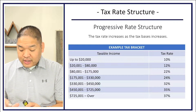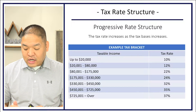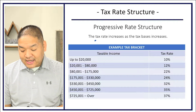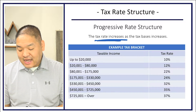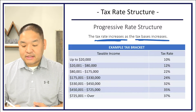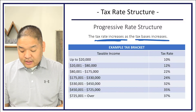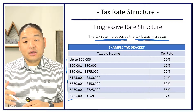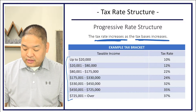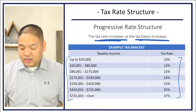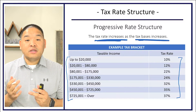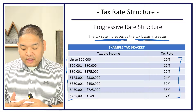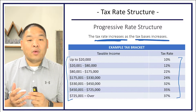Here's an example of a progressive rate structure. The progressive rate structure means the tax rate increases as the tax base increases. Here are my tax brackets, and as you can see, as the brackets increase, the tax rates are also increasing. One of the things you should know is that when we look at this tax bracket — if your income is between $20,001 and $80,000, your tax rate is 12%.